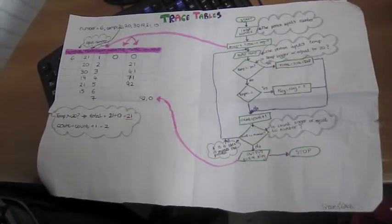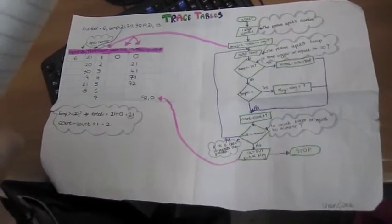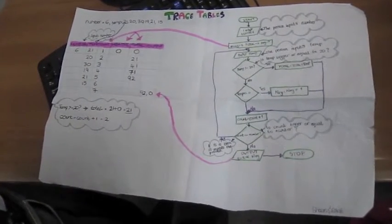Trace tables are a good way to check if a flowchart is working correctly. It helps make sure that nothing is going wrong and the process is correct.